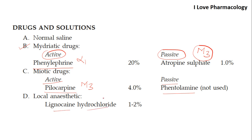From this slide, the important things to remember: mydriasis has two types — active and passive. The example for active mydriasis is phenylephrine, an alpha agonist. The example for passive mydriasis is atropine and its derivatives. For miotics, active miosis can be produced by pilocarpine or physostigmine, which reversibly inhibits the cholinesterase enzyme.